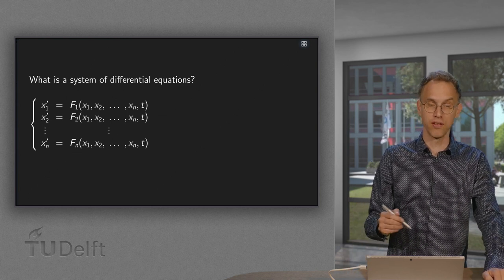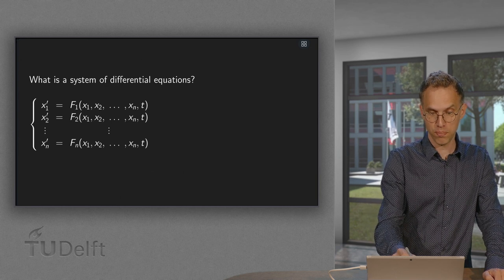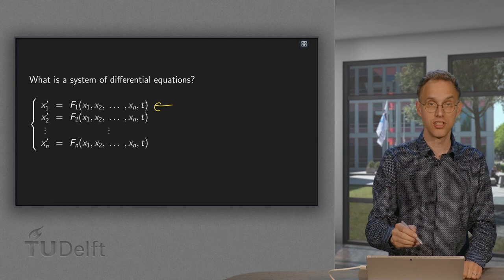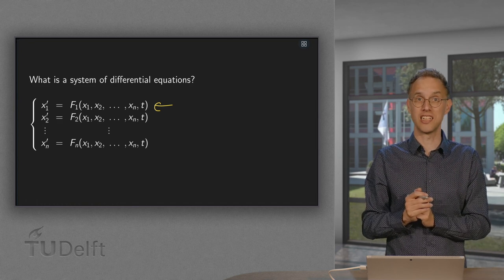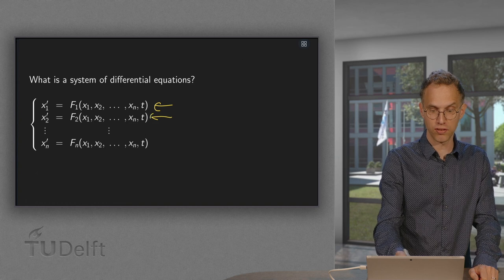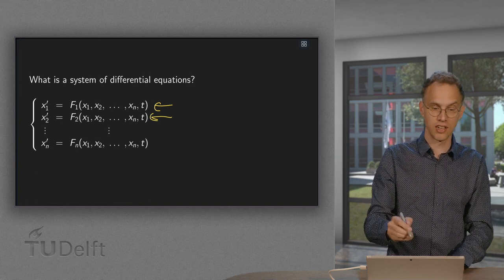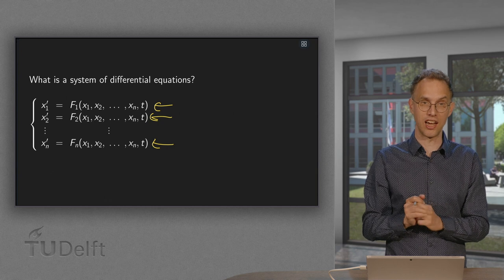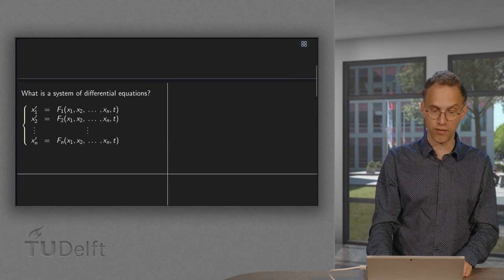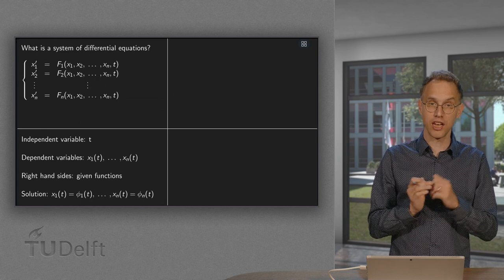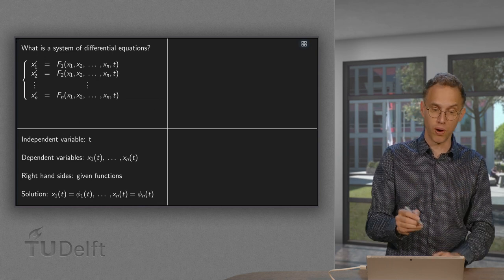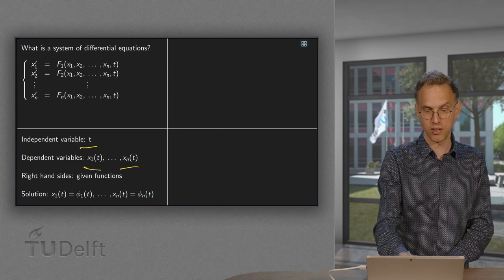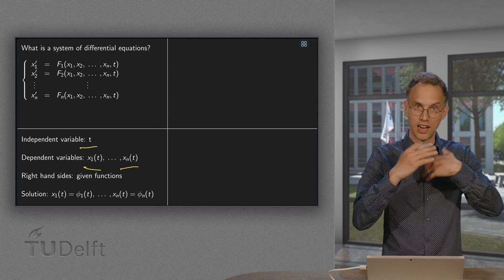So what do we have? We have an equation of the following form: x1 prime equals some right-hand side, which may depend on x1 up to xn and t. t is typically interpreted as time. Then the second differential equation gives x2 prime with some other right-hand side, up to the last equation xn prime with some given right-hand side. So f1, f2, and so on are given functions of x1 up to xn and t. We have one independent variable t, and n dependent variables x1 up to xn(t).